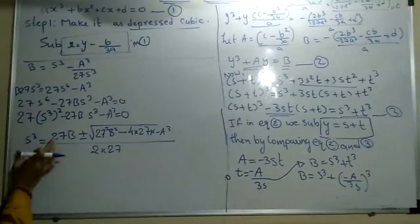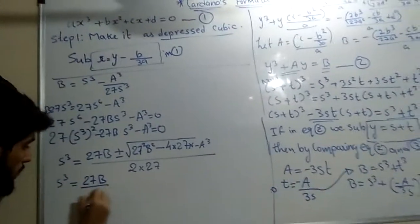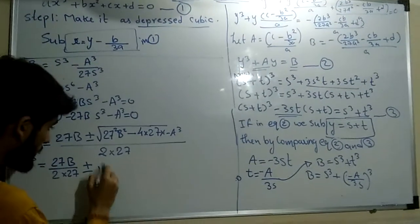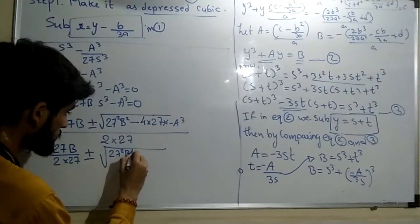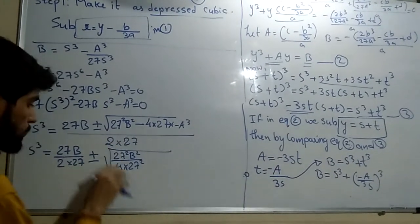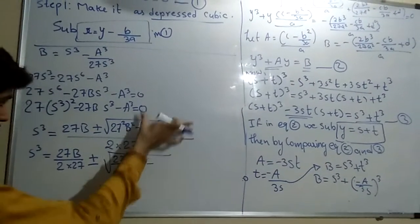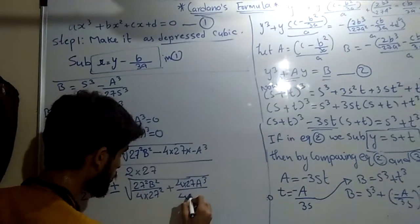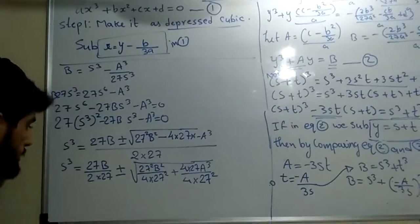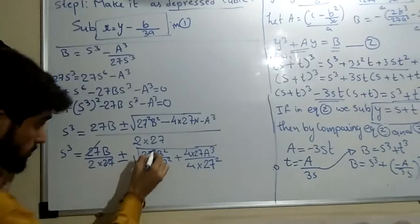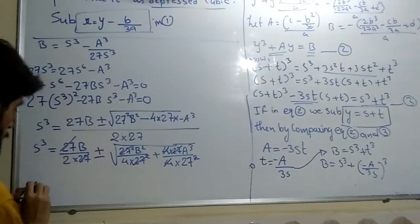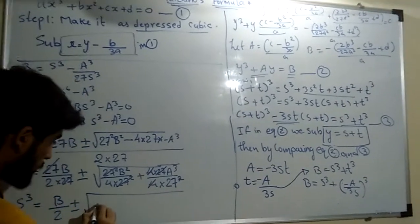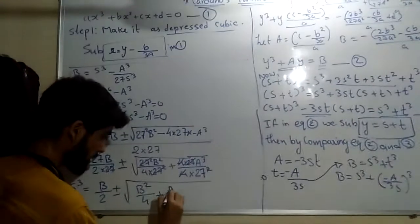Simplifying by taking terms inside the square root and cancelling common factors, we get s³ equals b/2 plus or minus the square root of b²/4 plus a³/27. The factors of 4 and 27² cancel appropriately, giving us this clean form for s³.